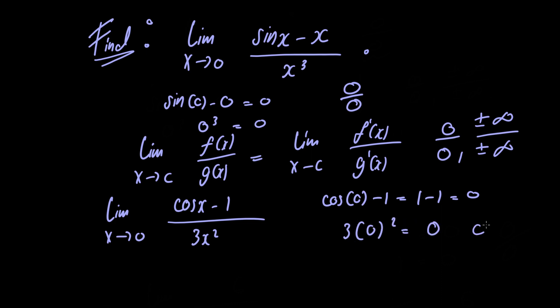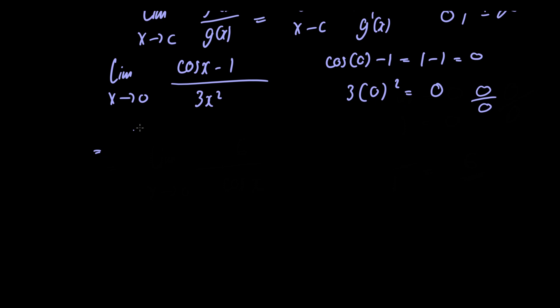So our limit is of indeterminate form 0 over 0 again. So let's apply L'Hopital's rule for a second time. Doing so, we have the limit as x approaches 0 of minus sine of x divided by 6x.